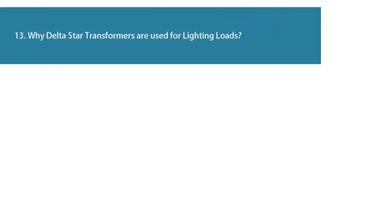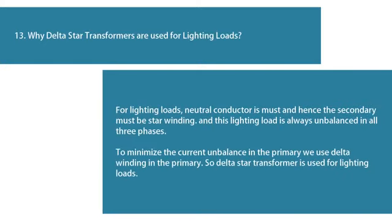Question 13: Why are delta-star transformers used for lighting loads? For lighting loads, a neutral conductor is necessary and hence the secondary must be star winding. Lighting loads are always unbalanced across all three phases. To minimize the current unbalance in the primary, we use delta winding in the primary. So delta-star transformers are used for lighting loads.